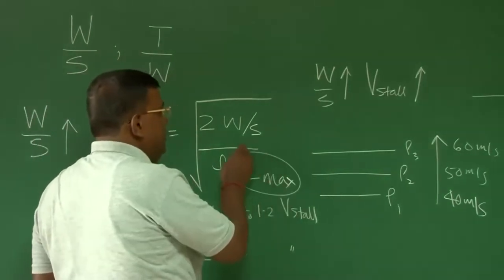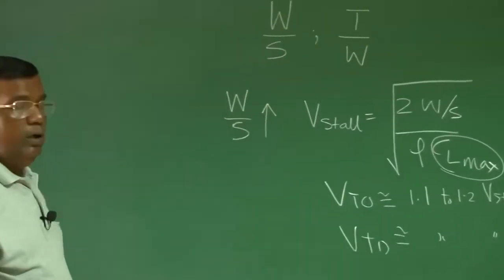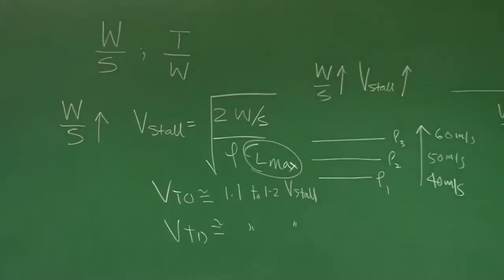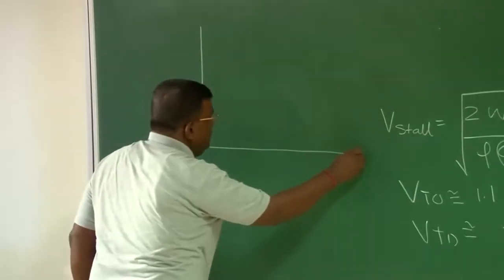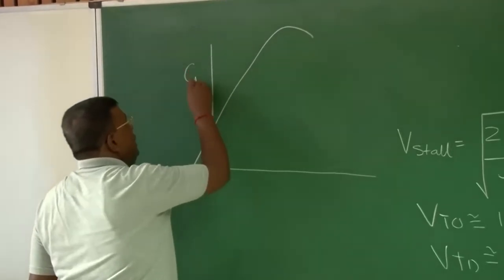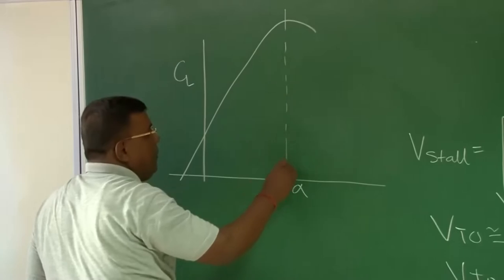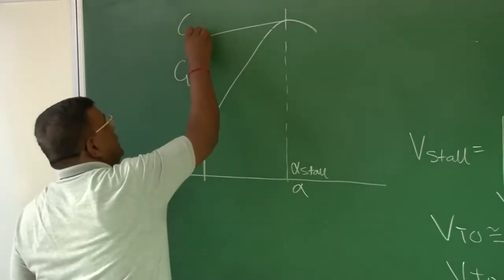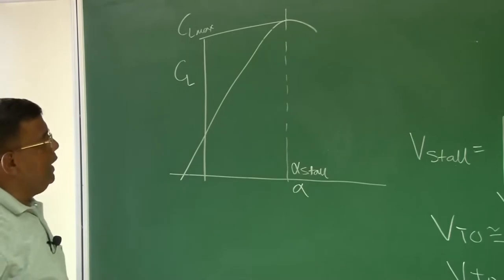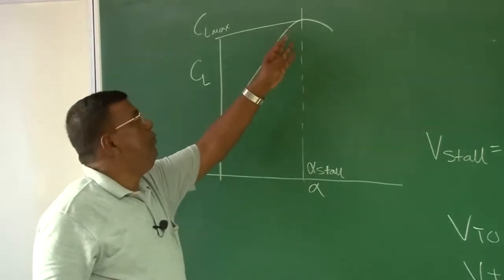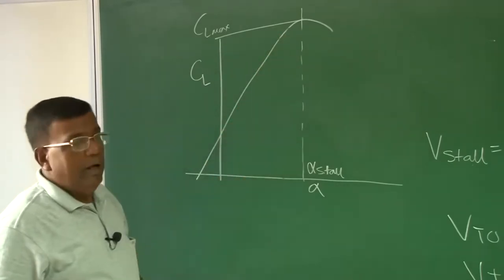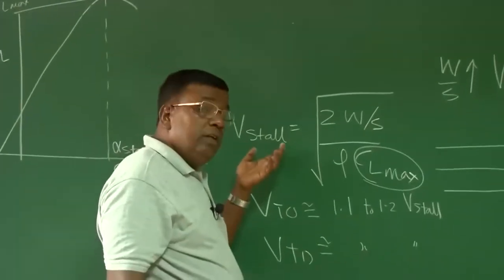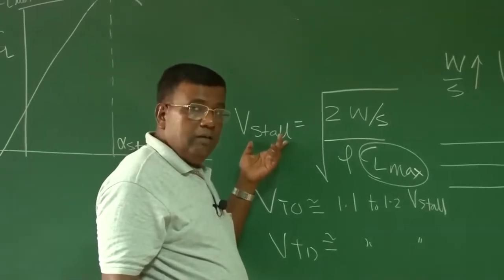Then another very critical parameter which a designer should look for and the whole technology has come to handle this issue CL max. What is CL max? Recall again performance course, if this is CL and this is alpha, there is a particular angle which say alpha stall and corresponding to that this is CL max. Generally, airplane will not fly here, will fly somewhere here if at all if you want to maximize the usage of CL max. Why do I want to maximize CL max?